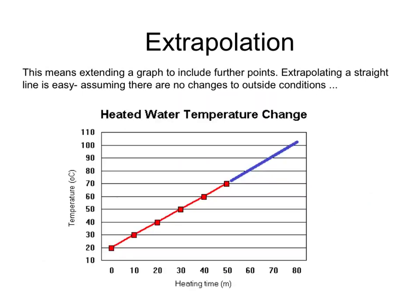For example, if we were to heat up some water and we could take data over a period of the first 50 minutes and we can see that the water is rising by 10 degrees for every 10 minutes, you could maybe assume that with the same heater, then the temperature would continue to rise at the same rate. So we're extrapolating the graph there in blue.